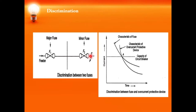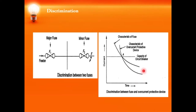Instead, if a fault occurs beyond F2, only F2 should melt and break the circuit — this is possible only with proper discrimination. To obtain discrimination, the pre-arching time of the major fuse F1 must be very much greater than the total operating time of the minor fuse F2. If we have a fuse and an overcurrent relay with a circuit breaker, the characteristics of the fuse and the overcurrent relay must be coordinated such that the overcurrent relay operates for currents within the breaking capacity of the circuit breaker.